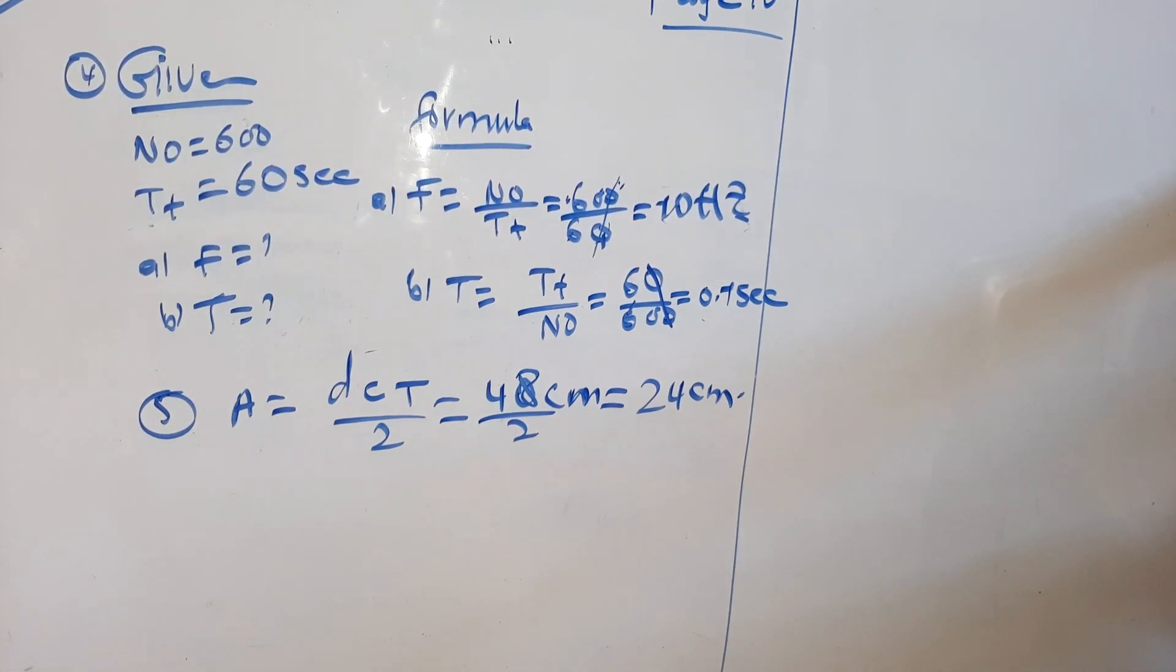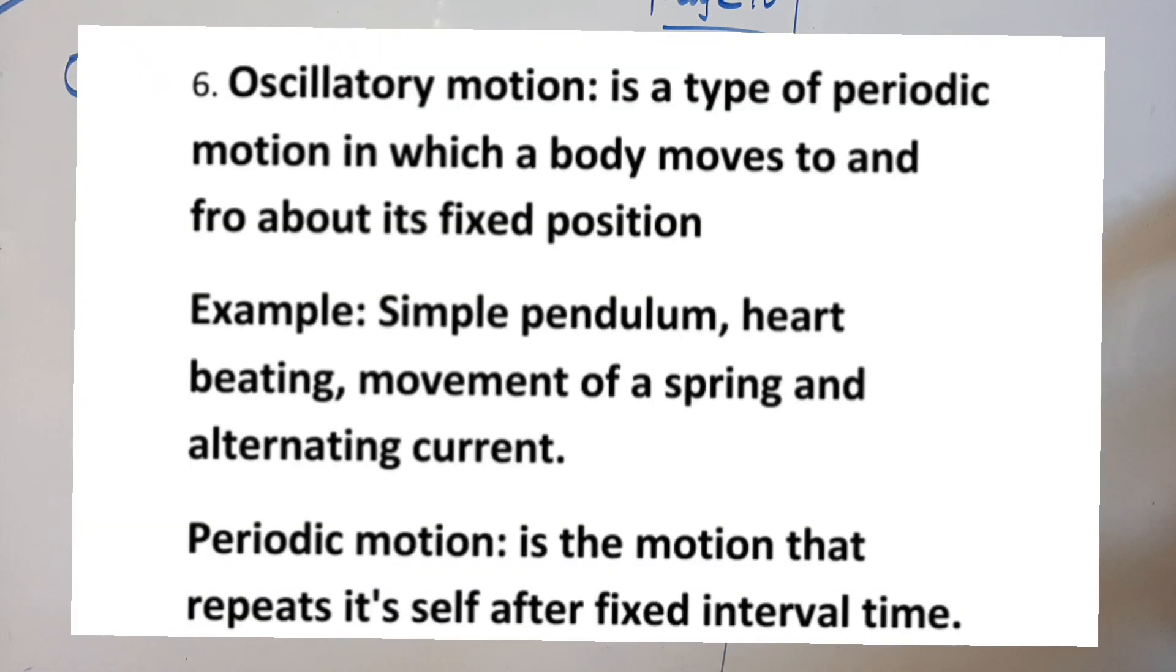Now we have to define oscillatory motion and give an example. Oscillatory motion is a type of periodic motion in which a body moves to and fro about a fixed position. Periodic motion is the motion that repeats itself after fixed interval time.